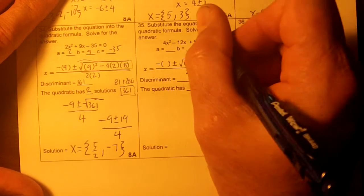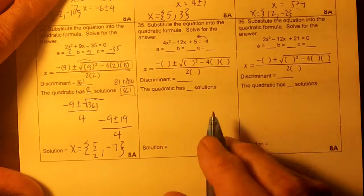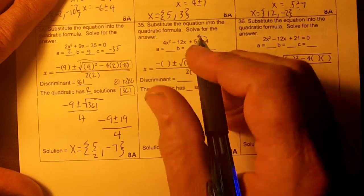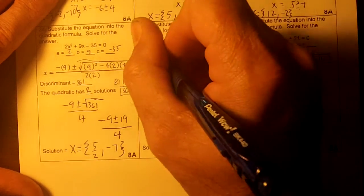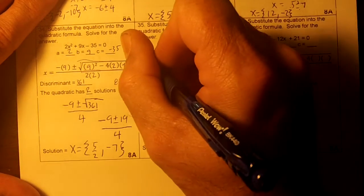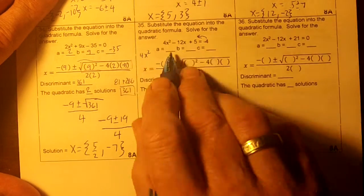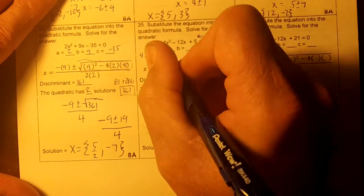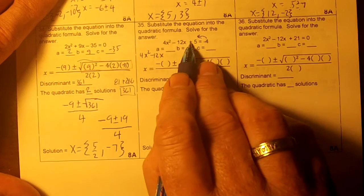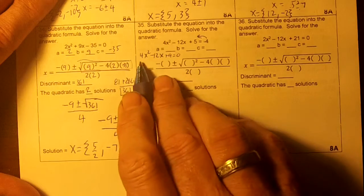Okay, on this one right here, we have to move over the 4 to get our A, B, and C, right? So we'll have, let me do it down here, 4x squared minus 12x. And then if you move the 4 over, it's going to be plus 9 equals 0, right?